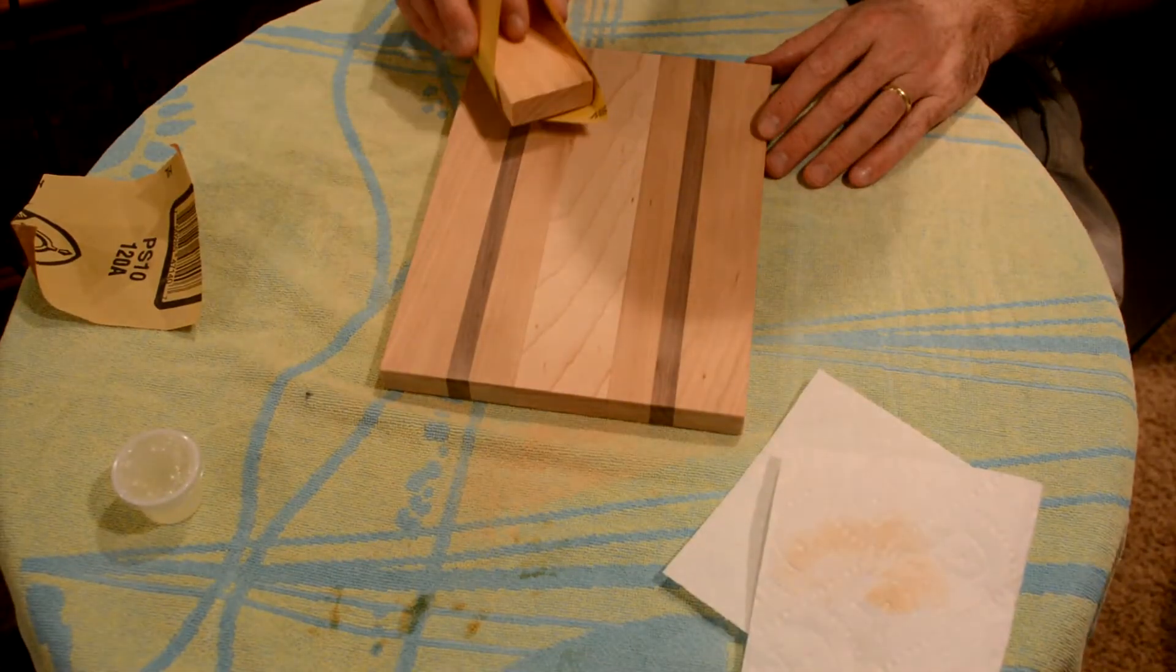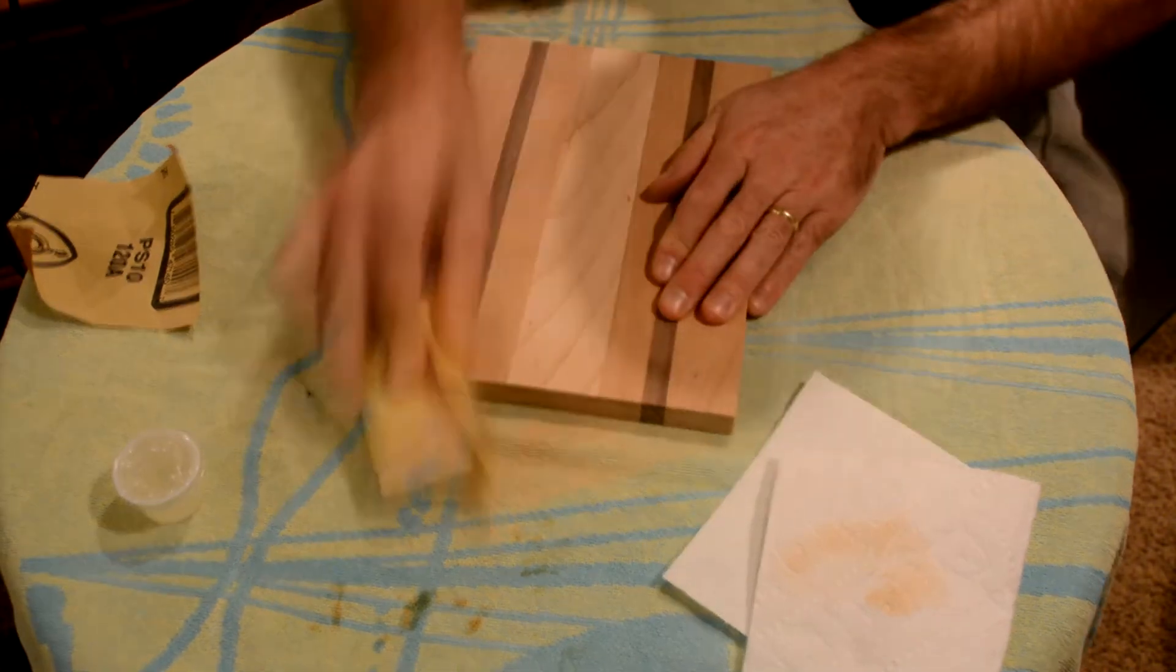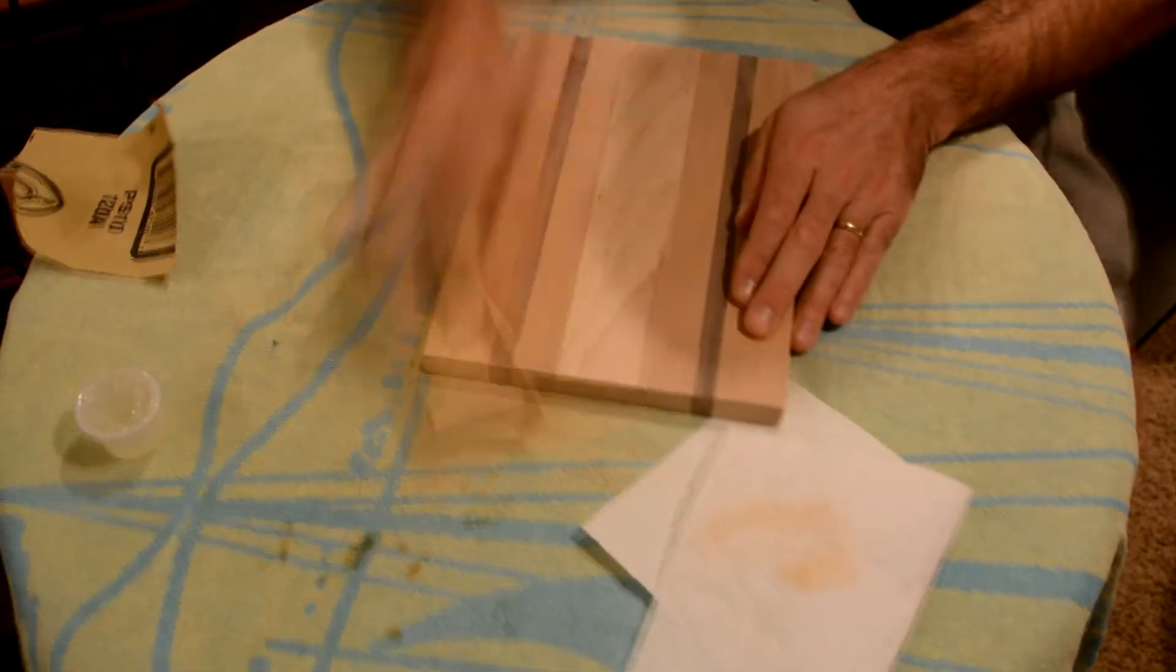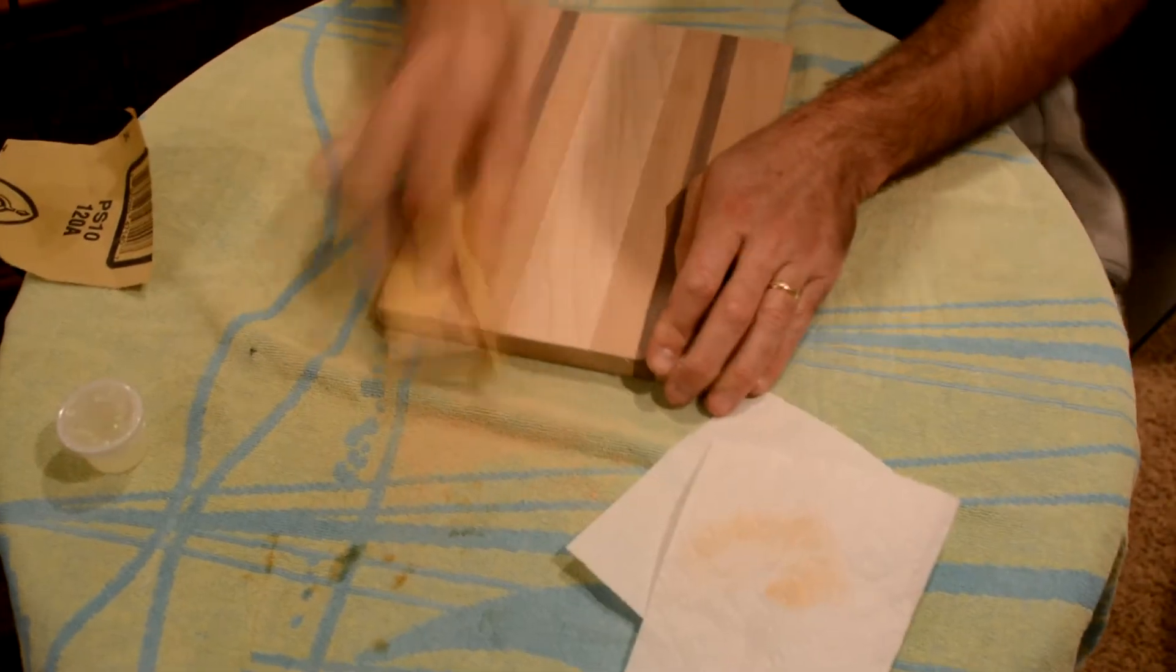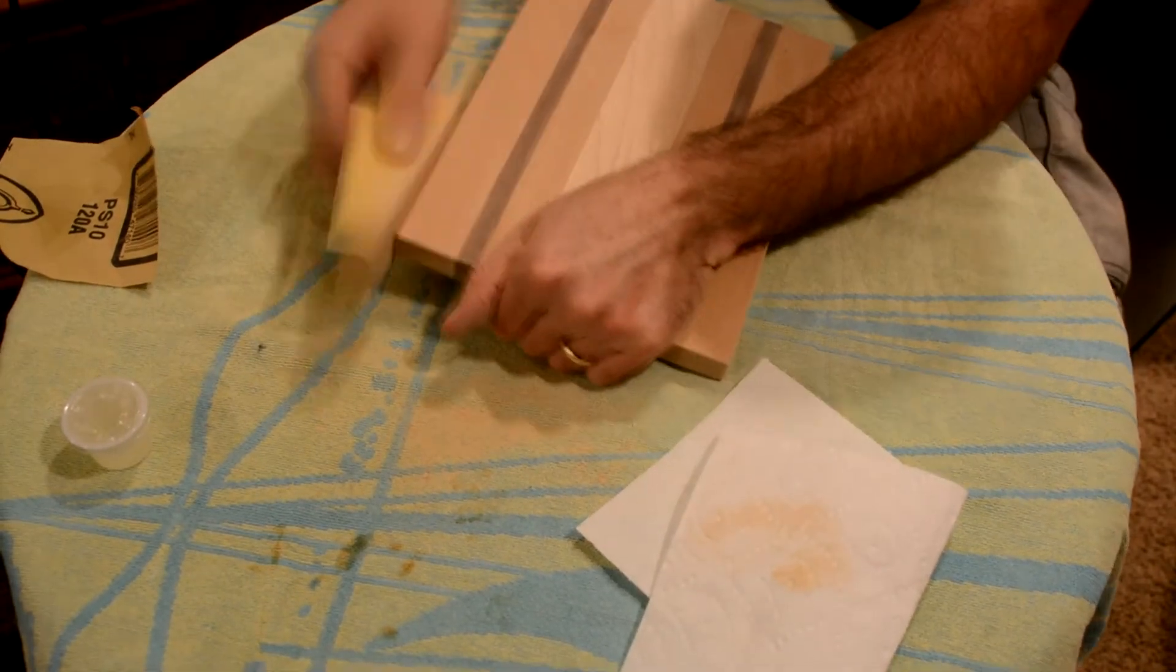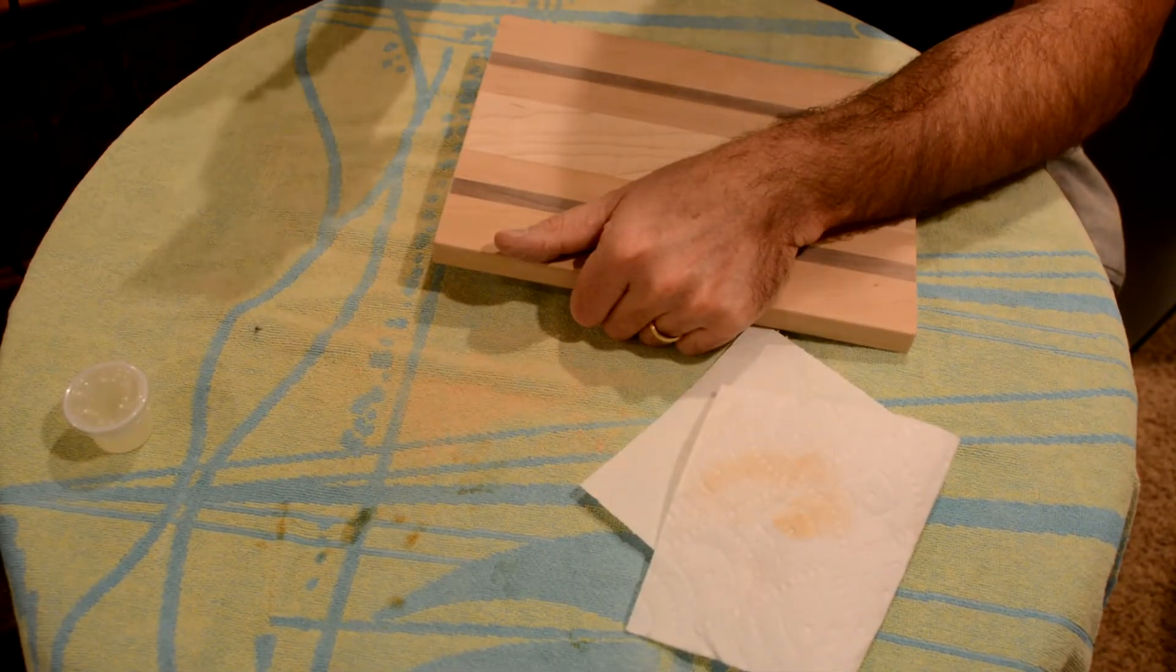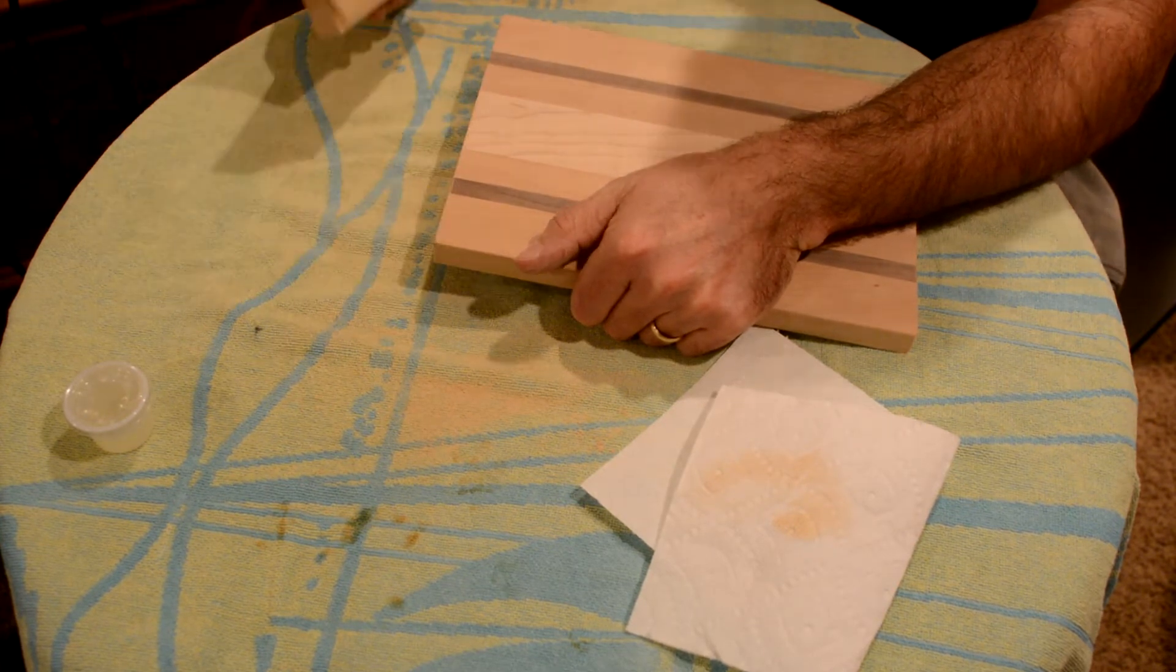Remember to sand with the grain, and sand the entire length of the cutting board, end to end. Everything we did with the first sandpaper, we'll do with the second sandpaper, so including all these edges, corners, and all the way around.